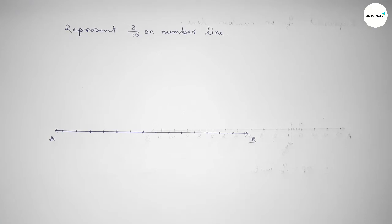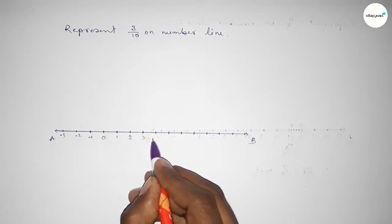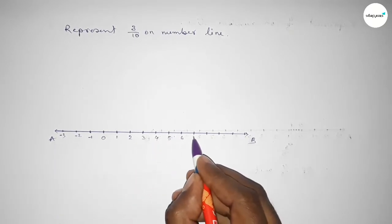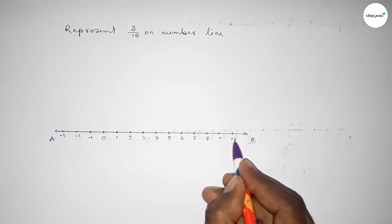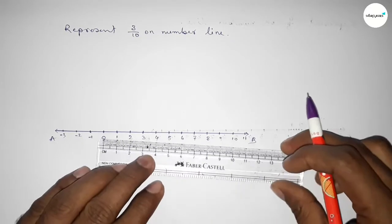Starting with 0, mark this side minus 1, minus 2, minus 3, and this side plus 1, 2, 3, 4, 5, 6, 7, 8, 9, 10, 11. Now we have to divide the distance between any two numbers.